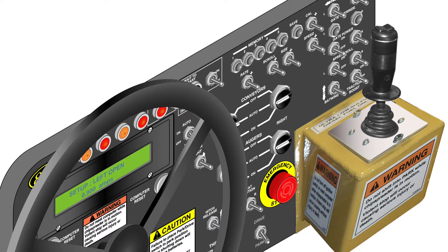This screen is used to adjust the threshold current to the left gate open solenoid. Use the cal switch to adjust the current up or down to increase or decrease the speed at which the left gate opens. Adjusting this value too high will cause the gates to hunt around the desired gate opening. Adjusting this value too low will cause a delay of the gate opening. Push the scroll switch down to move to the next screen.